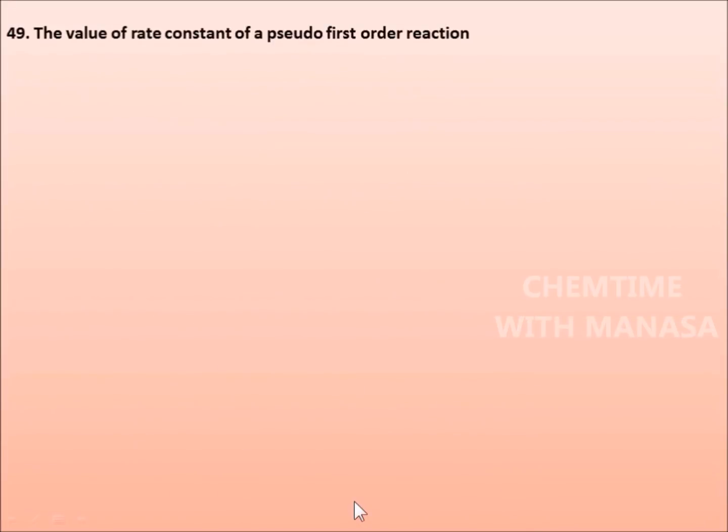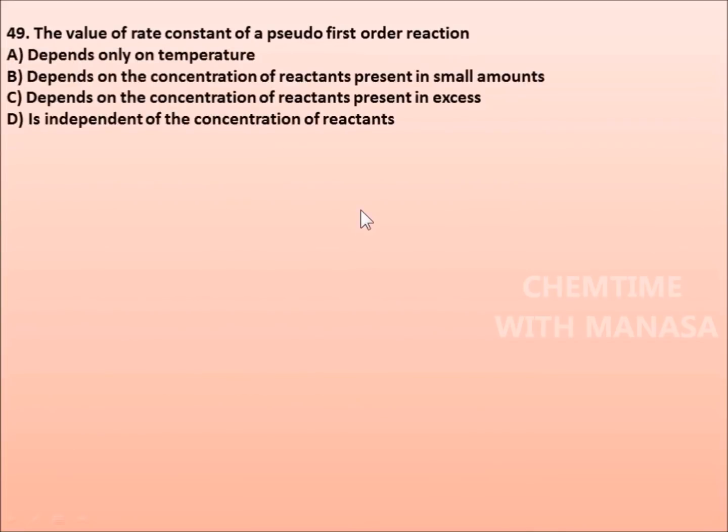Question number 49: The value of rate constant of a pseudo first order reaction depends only on temperature, depends on the concentration of reactants present in small amounts, depends on concentration of reactants present in excess, or is independent of the concentration of reactants. Correct answer is option A, depends only on temperature.